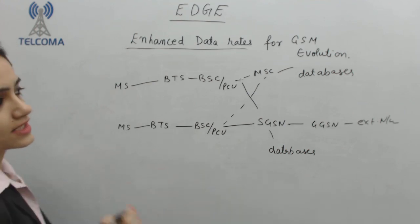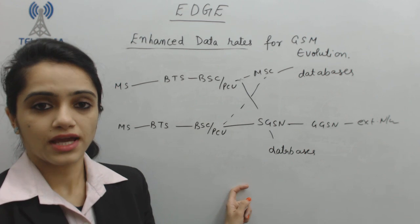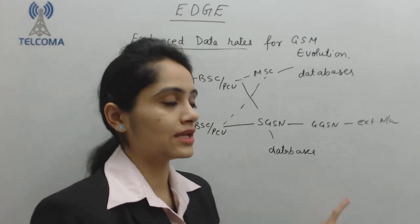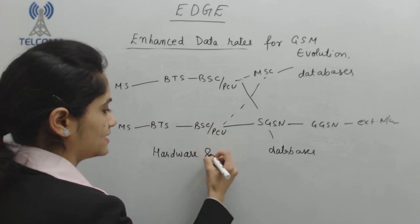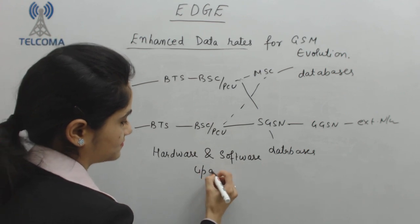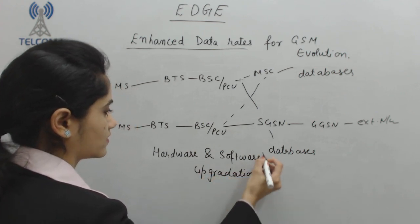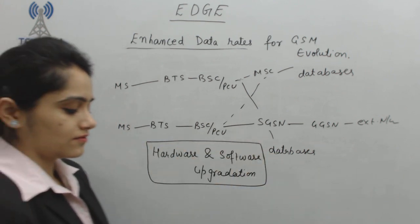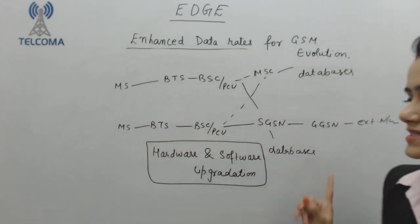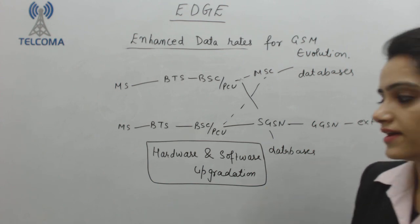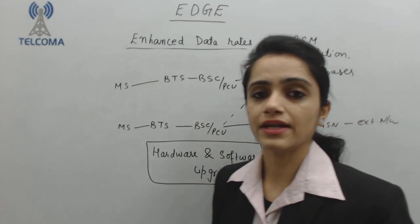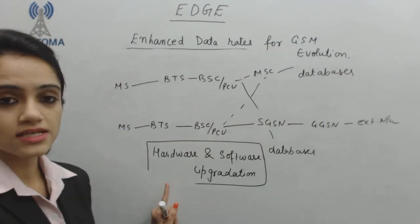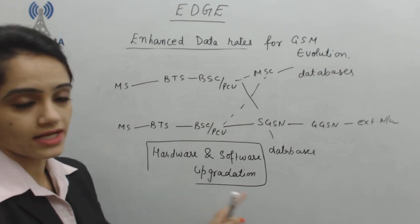We have this architecture of GPRS. Whenever we are required to add EDGE technology, we are not going to replace any of the components. In EDGE, we require only hardware and software upgradation. So whenever we move from GPRS towards EDGE, we do not change any of the components from this architecture — only we have upgradation of hardware as well as software.